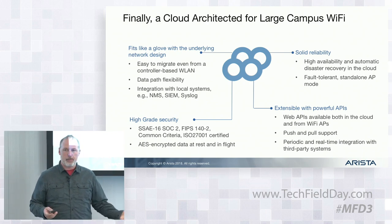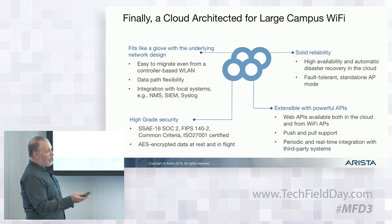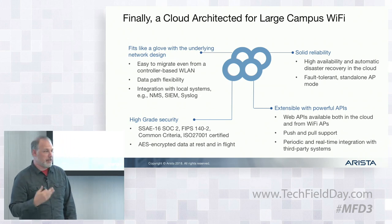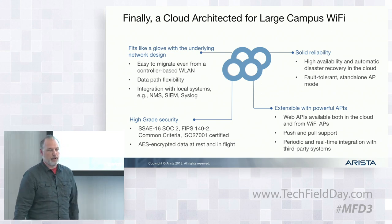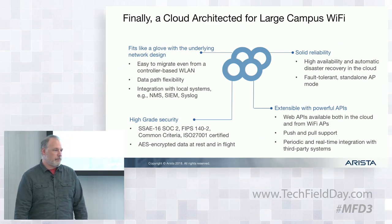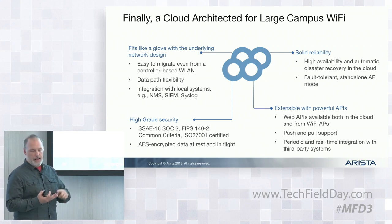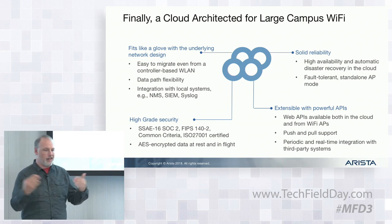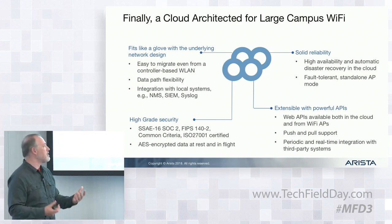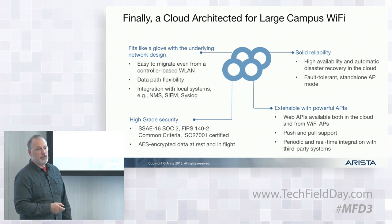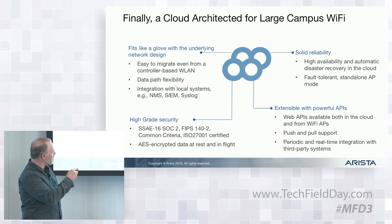We believe this is architected for large enterprise customers. The security piece: if you're a cloud vendor going to a financial or insurance company and saying we want to take over your Wi-Fi network and it's cloud-based, they don't trust whether it's secure. We actually go through SSA 16 SOC 2, FIPS Common Criteria, and ISO 27001 — governing how it's run in the cloud, who has access, what security parameters exist, how audits happen, automated threat analysis. We do it because our enterprise customers demand it. Other vendors may say SSA 16, but it's really the SOC 2 that's important.